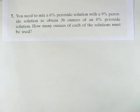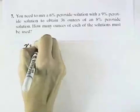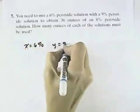Well, using the four-step strategy, we could let our variables say x equals the 6% solution and y equals the 9% solution.